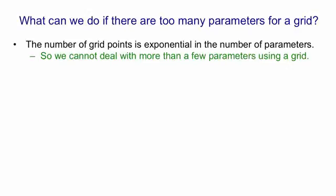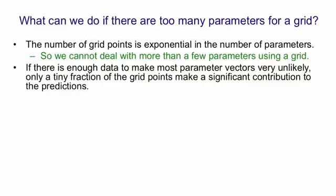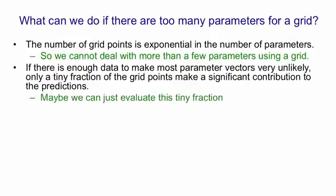The number of grid points is exponential in the number of parameters, so we can't make a grid for more than a few parameters. If there's enough data so that most of the parameter vectors are very unlikely, only a tiny fraction of the grid points will make a significant contribution to the predictions. So maybe we can just focus on evaluating this tiny fraction if we can find it.